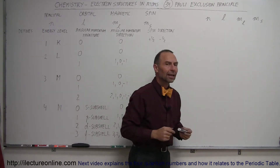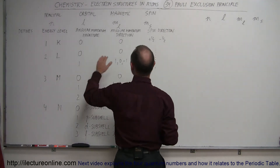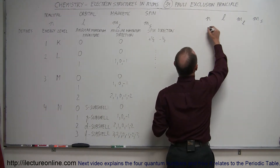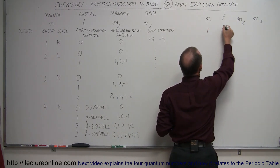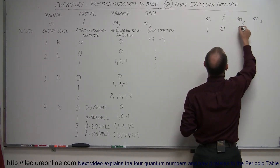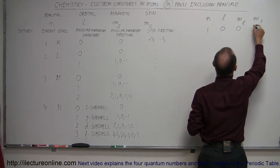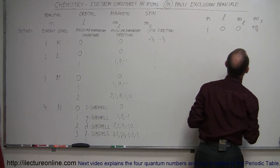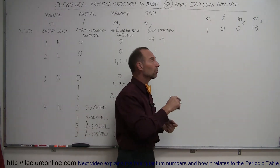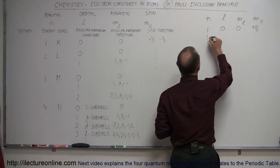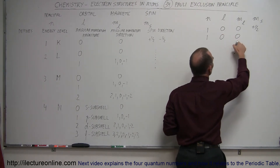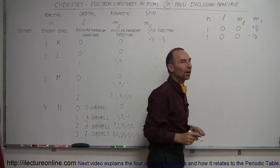Let's start putting down electron configurations based upon the four quantum numbers. For an electron in the first energy level, it has a zero angular momentum quantum number, zero magnetic quantum number, and either a plus or minus one-half spin number. One electron has those four quantum numbers, and the other electron in the same energy level with the same angular momentum and direction would have to have an opposite spin direction.